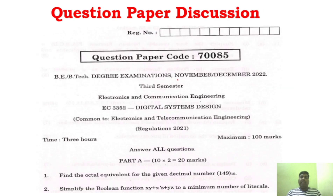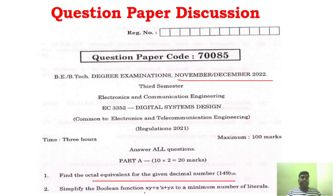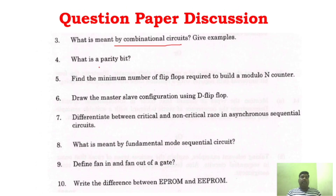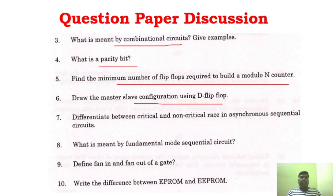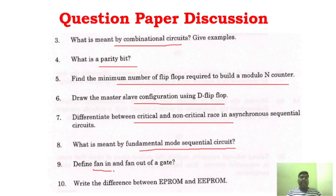Now we will see the question paper discussion. We are looking at the December 2022 question paper. The 2-mark questions include: number system conversion, simplify Boolean algebra, what is done by combinational circuit, what is a parity bit, minimum number of flip-flops required to model a counter, master-slave configuration of D flip-flop, differentiate critical and non-critical race in sequential circuits, what is fundamental mode sequential circuit, define fan-in and fan-out of a gate, and difference between EPROM and EEPROM memory.